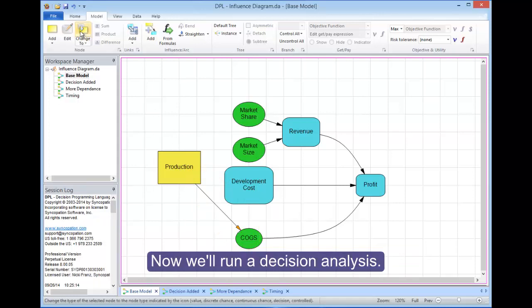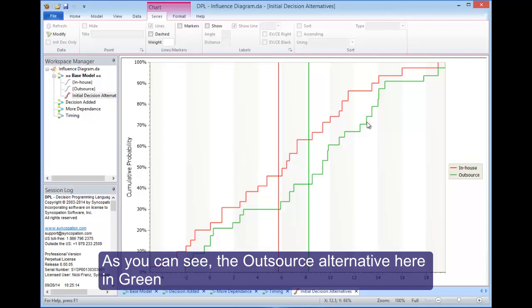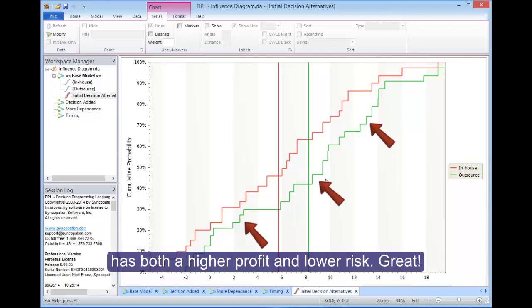Now we'll run a decision analysis. As you can see, the outsource alternative here in green has both a higher profit and lower risk. Great!